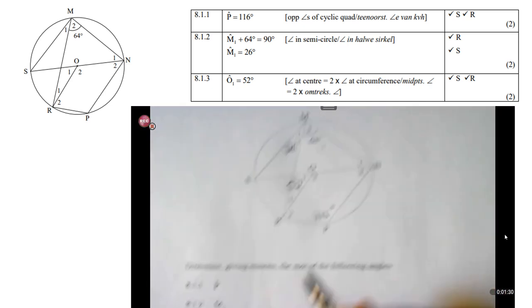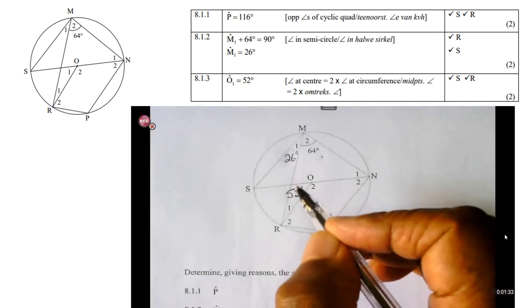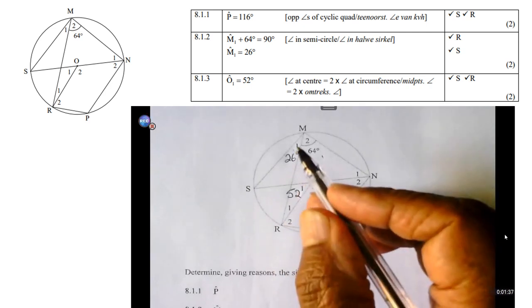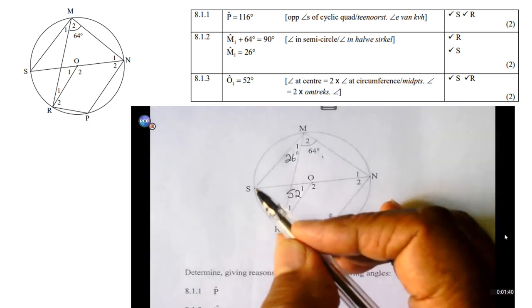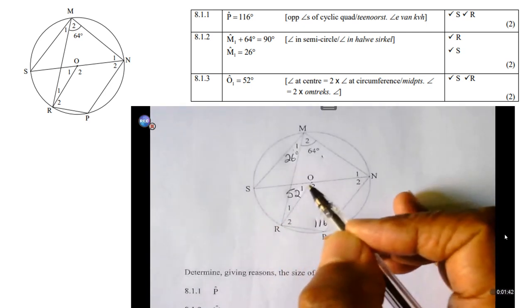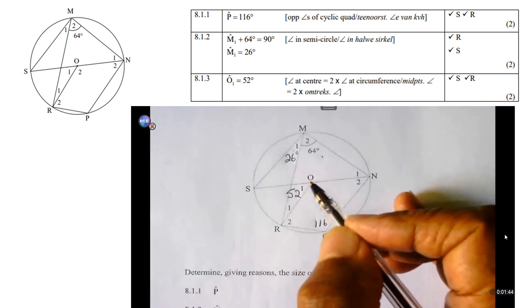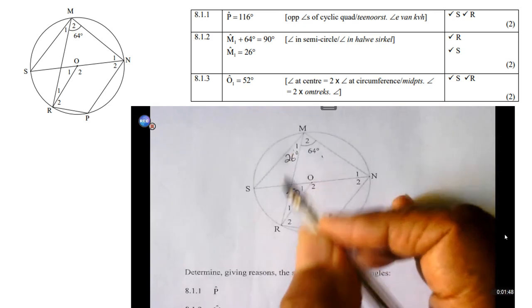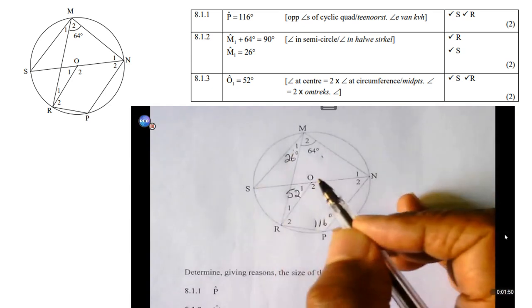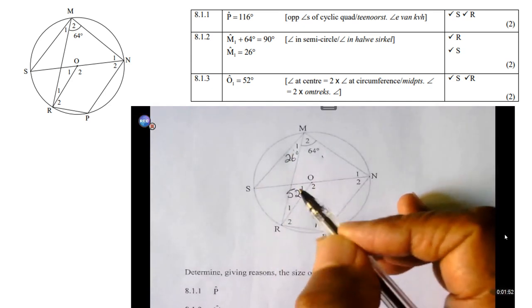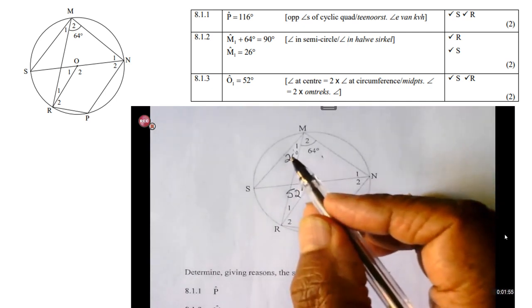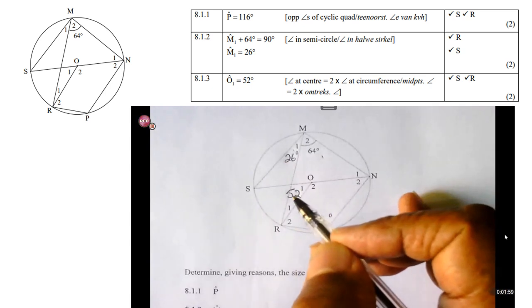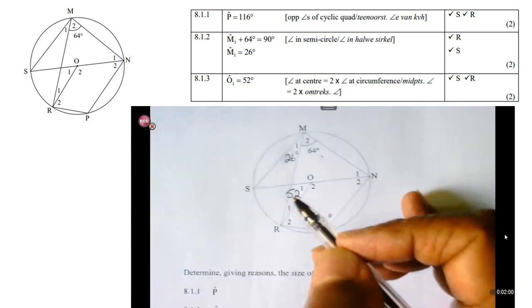And then O1, there is O1. You'll notice that O1 is subtended by SR. But M1 is also subtended by SR. O1 is angle at the center and M1 is angle in the opposite segment. So, therefore, O1 is then twice M1. So, therefore, if M1 is 26, then this one should be 52 degrees.